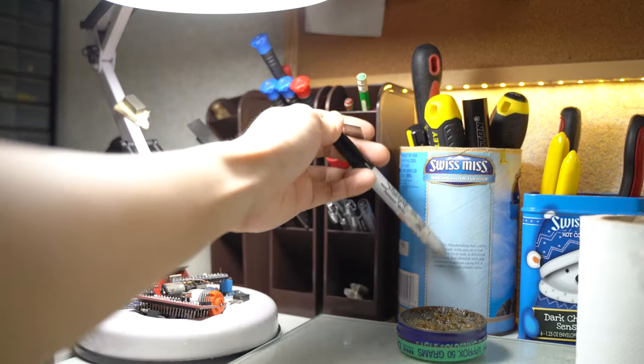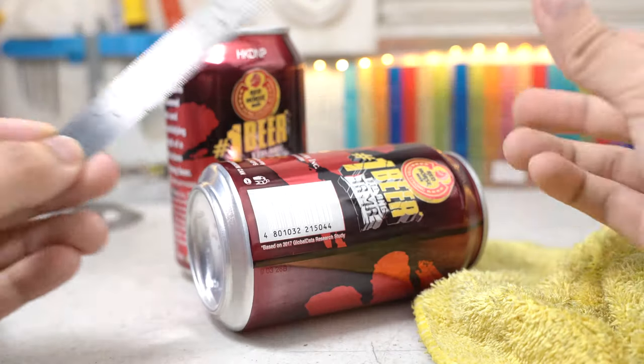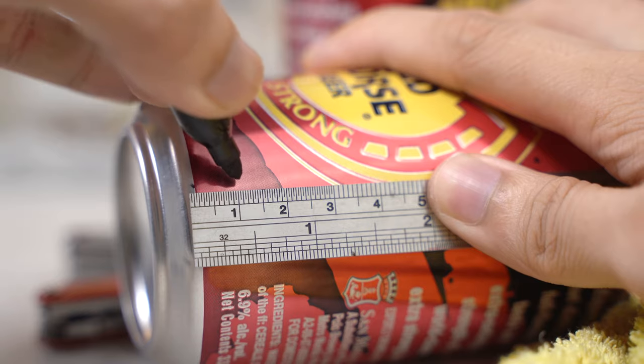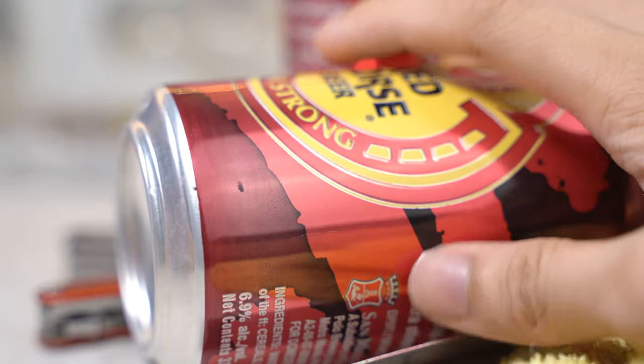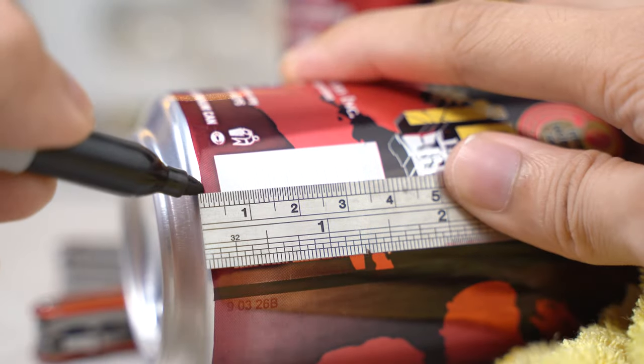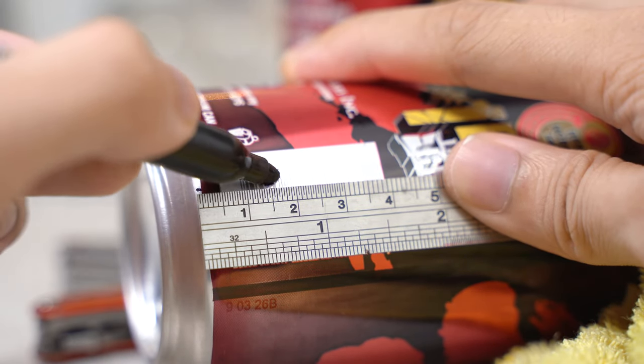Let's start the project by grabbing a sharpie and a ruler. We're going to use the ruler for marking the measurements on the can. For the first can, draw a line 1 cm from the rim. For the second can on the other hand, draw a line 1.5 cm from the rim.